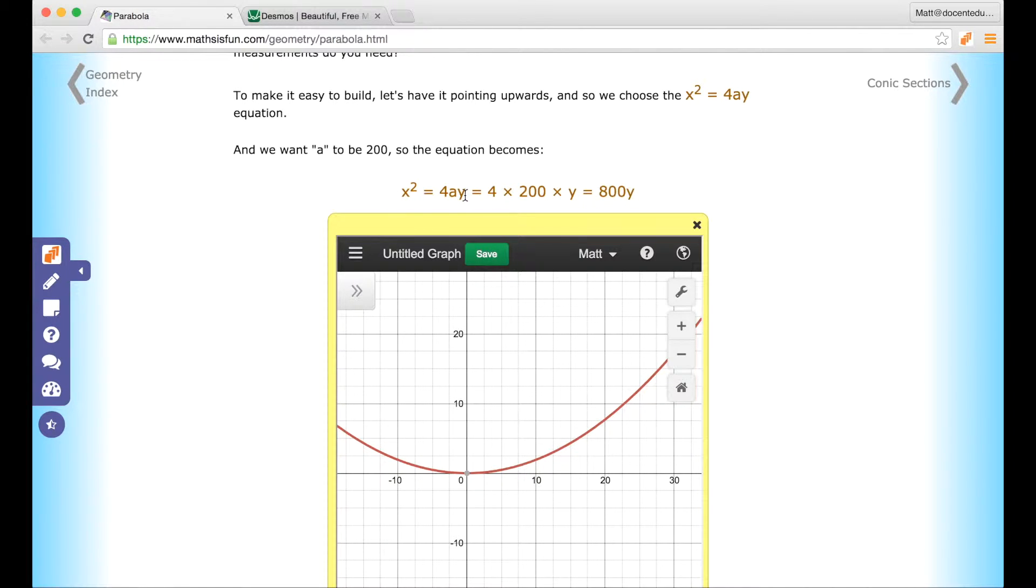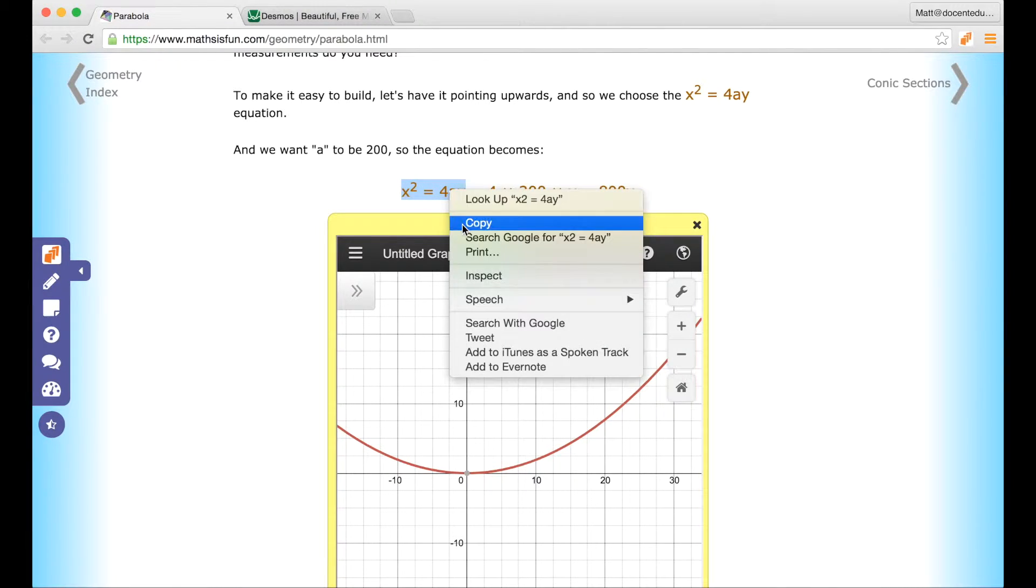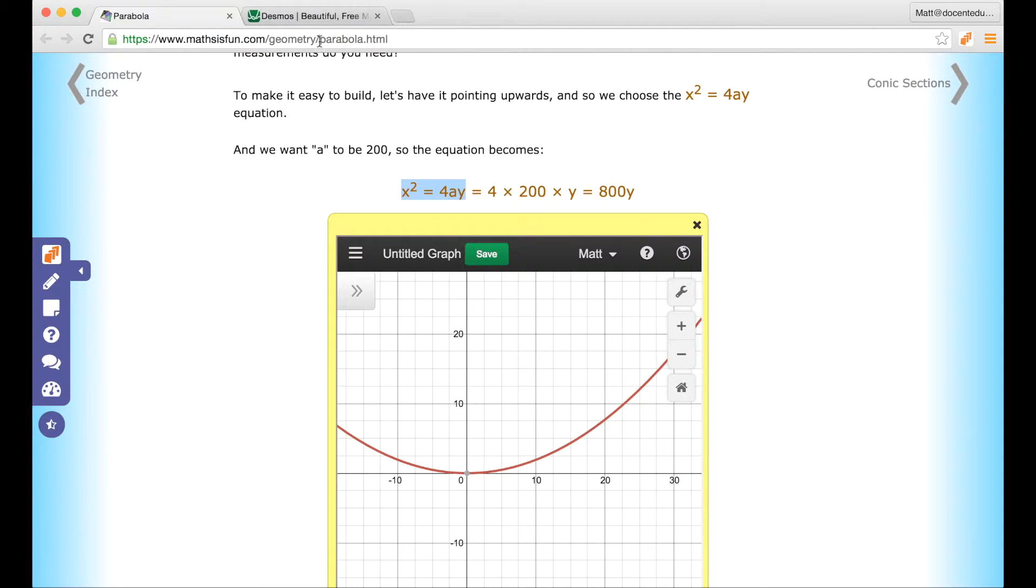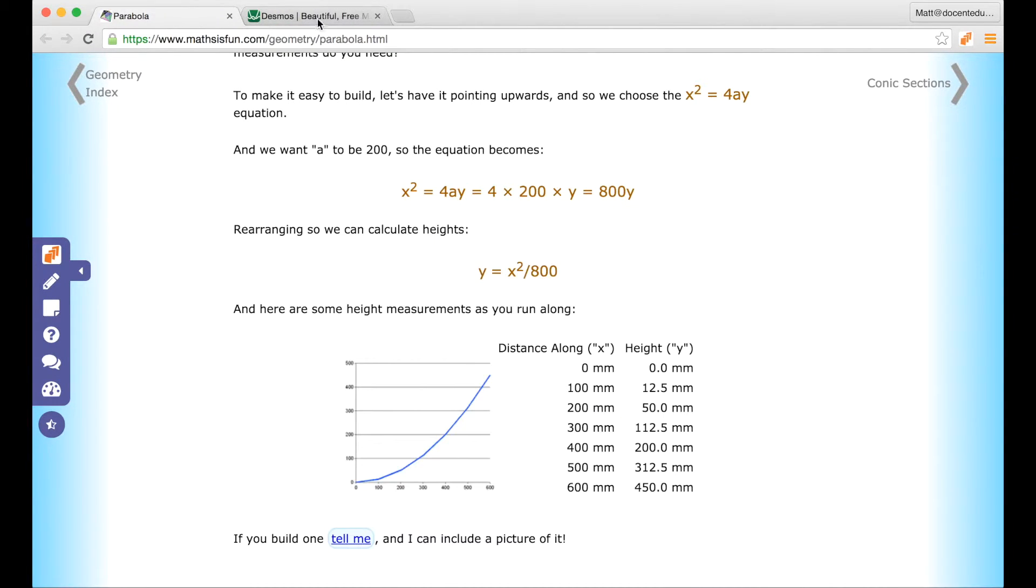This is the equation that's in Math is Fun. So we have x squared is equal to 4ay and I'm going to go ahead and copy that. And for creating this interactive graph,